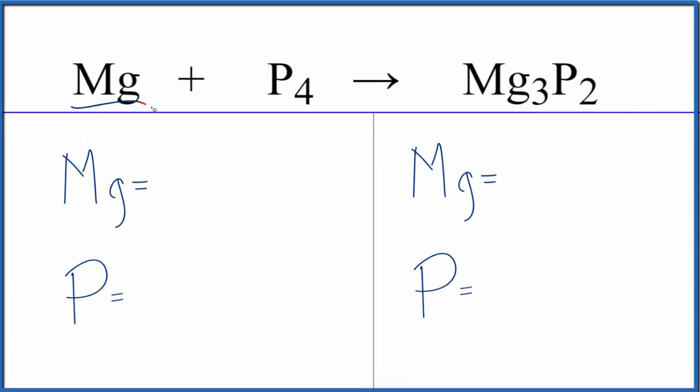Let's balance the equation Mg plus P4 gives us Mg3P2. We have magnesium plus tetraphosphorus, and this is magnesium phosphide. So first thing, we count the atoms up, then we balance the equation.